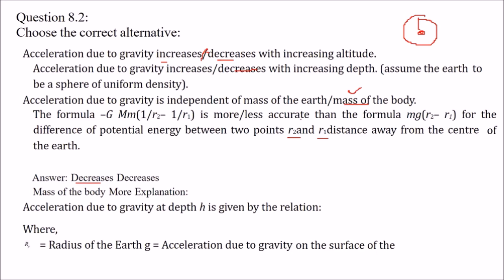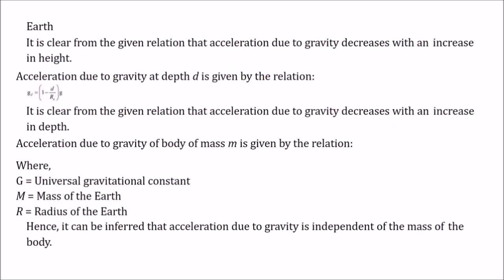Toh iske baare mein baat karte hain. Pehle cheez toh dekhiye ki acceleration due to gravity kisi height ya kisi depth par — jab hum height ki baat karenge toh upar ki baat karenge, neechay ki baat karenge. Aur acceleration due to gravity kisi depth 'd' pe: gd equal to (1 minus d/R) into g. Isse clear hai ki jo relation hai — acceleration due to gravity jaisi aap depth ki taraf jayenge toh decrease hoti hai. Agar aap center of earth pe pahunch jaayein toh gravity zero ho jaati hai.